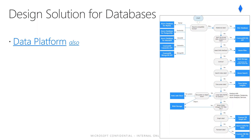Use this flowchart to select a candidate data store. Service tiers in the DTU-based purchase model are differentiated by a range of compute sizes with a fixed amount of included storage, fixed retention period for backups, and fixed price. All service tiers in the DTU-based purchase model provide flexibility of changing compute sizes with minimal downtime. However, there is a switchover period where connectivity is lost to the database for a short amount of time, which can be mitigated by using retry logic. Single databases and elastic pools are billed hourly based on service tier and compute size.